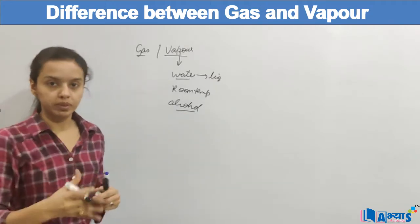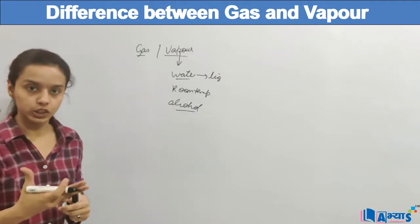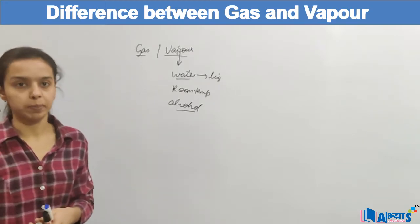Alcohol is also liquid at room temperature. So when it becomes in the gaseous state, we always say that it has become into vapours.